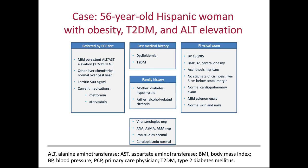Studies for other causes of liver disease are unremarkable other than the ferritin, which is not unusual for somebody with any kind of inflammatory liver condition. Her vital signs show borderline hypertension and high BMI, otherwise notable just for acanthosis nigricans but no stigmata of cirrhosis.